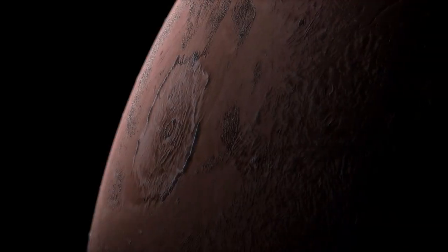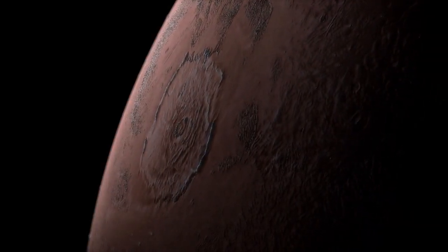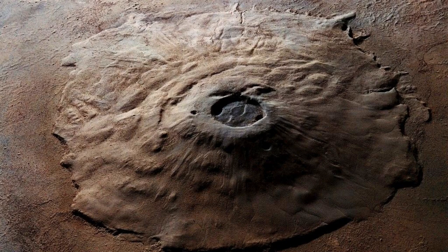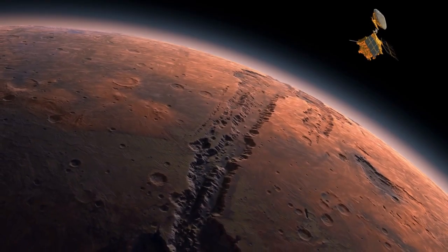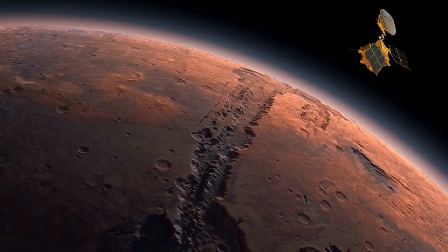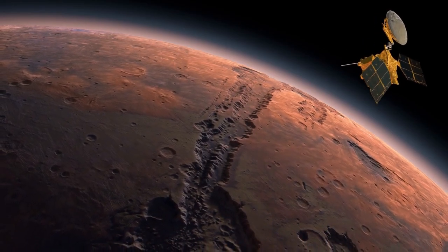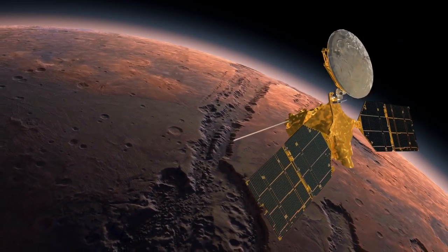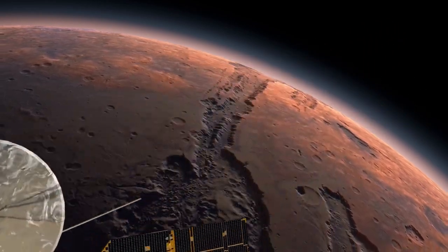Mars has the largest volcano in the solar system, Olympus Mons, which stands at a towering height of 16 miles or 25 kilometers. Mars has the longest canyon in the solar system, Valles Marineris, which is over 2,500 miles or 4,000 kilometers long.